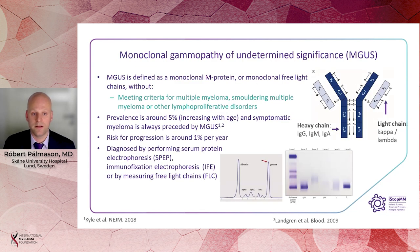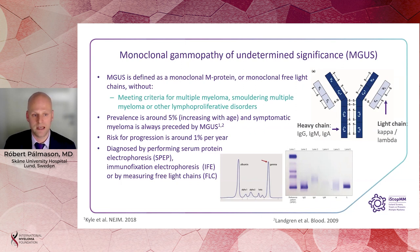Monoclonal gammopathy of undetermined significance, or MGUS, is defined as the presence of a monoclonal M protein or monoclonal free light chain without meeting the criteria for multiple myeloma, smoldering myeloma, or other lymphoproliferative disorders. The prevalence is around 5% and symptomatic myeloma is always preceded by MGUS. The risk for progression is around 1% each year, and it is diagnosed by performing serum protein electrophoresis, immunofixation electrophoresis, or by measuring free light chains.